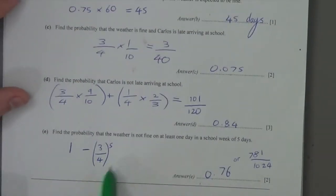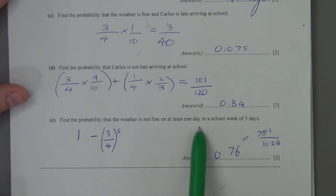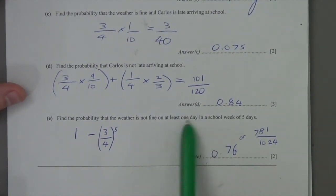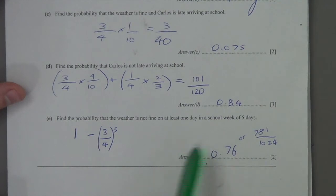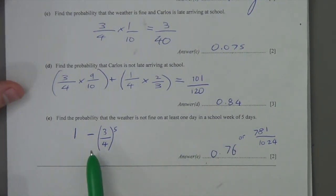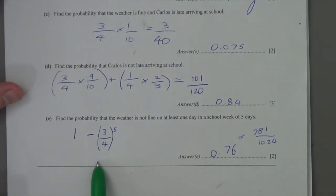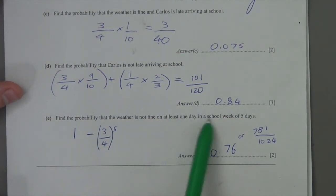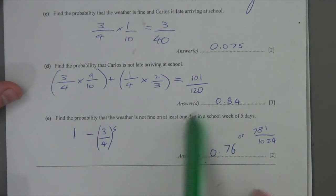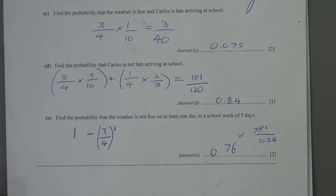Just remember this method: if a question says 'at least something,' it generally has more than one possible route. So keep it simple — do one minus the probability of the event you don't want, and you'll get the right answer. That's the end of this video.